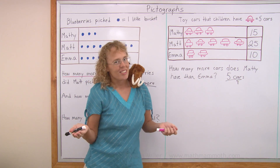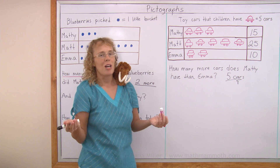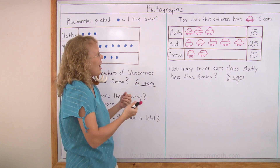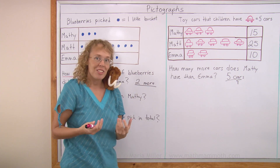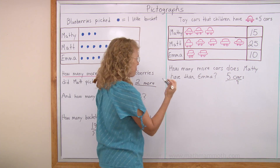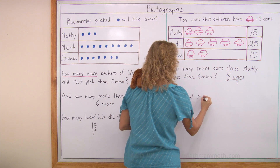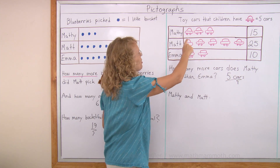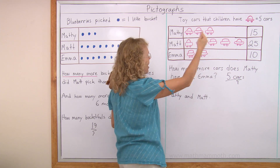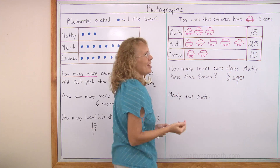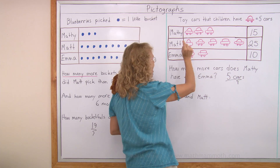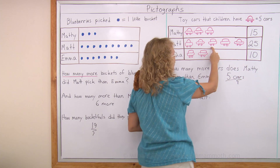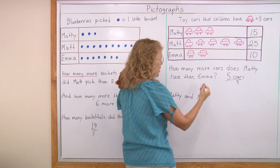You could also ask how many fewer cars Emma has than Matt, or how many they have in total. For example, how many cars do Matthew and Matt have together? Matthew has fifteen and Matt has twenty-five, so you can count by fives: five, ten, fifteen, twenty, twenty-five, thirty, thirty-five, forty. Matthew and Matt have forty cars together. We could also ask how many all three children have together.